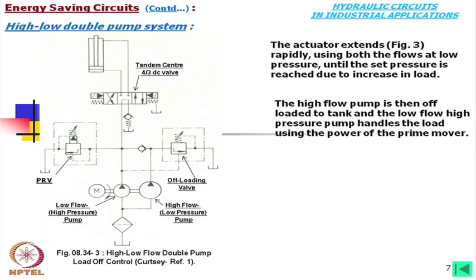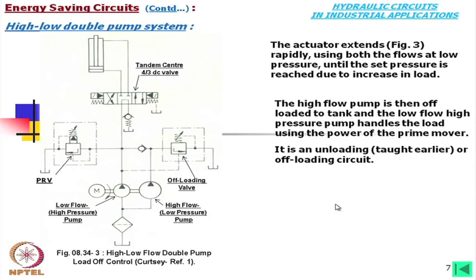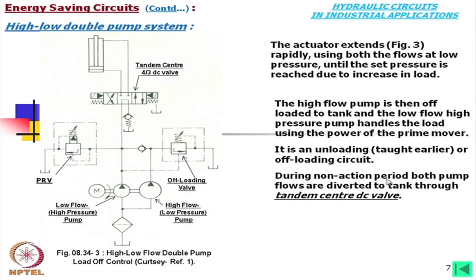The high flow pump is then off-loaded to tank and the low flow high pressure pump handles the load using the power of the prime mover. During the non-action period, both pump flows are diverted to tank through the tandem center valve — this means we are saving energy when it is not being operated.